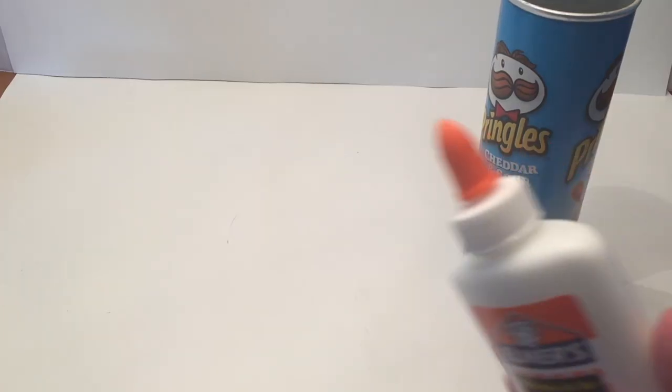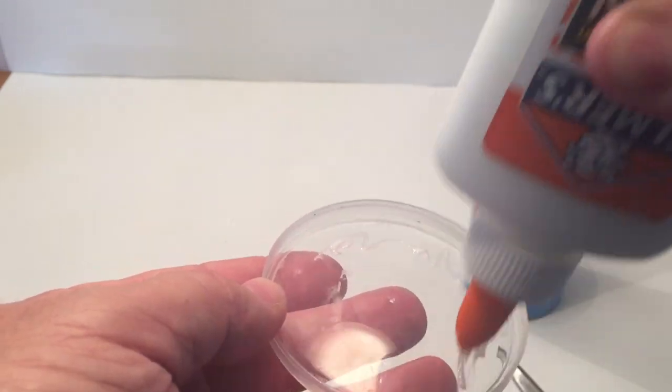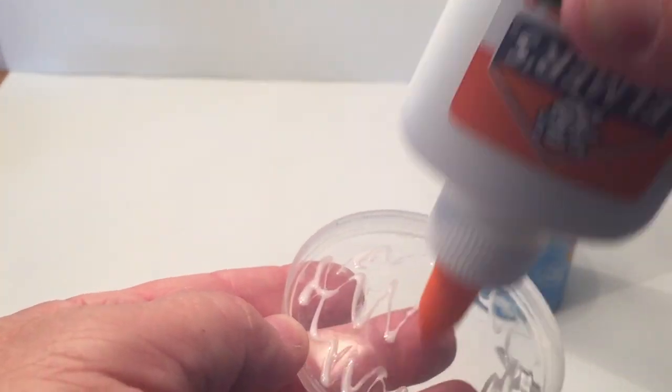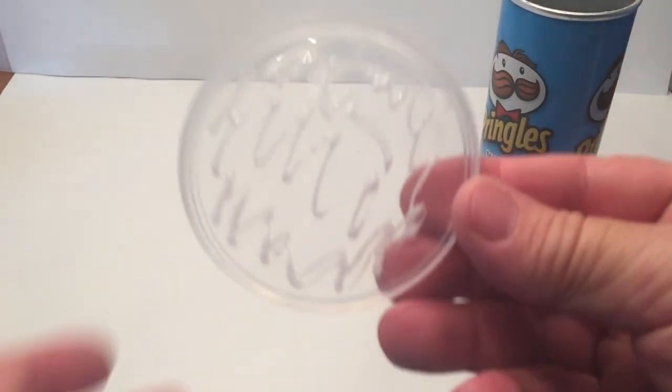Then take some glue. I'm using Elmer School Glue. Any kind of glue will work. Just put a thin coat on the inside of the plastic lid. This is just going to help us view the sun a lot easier.